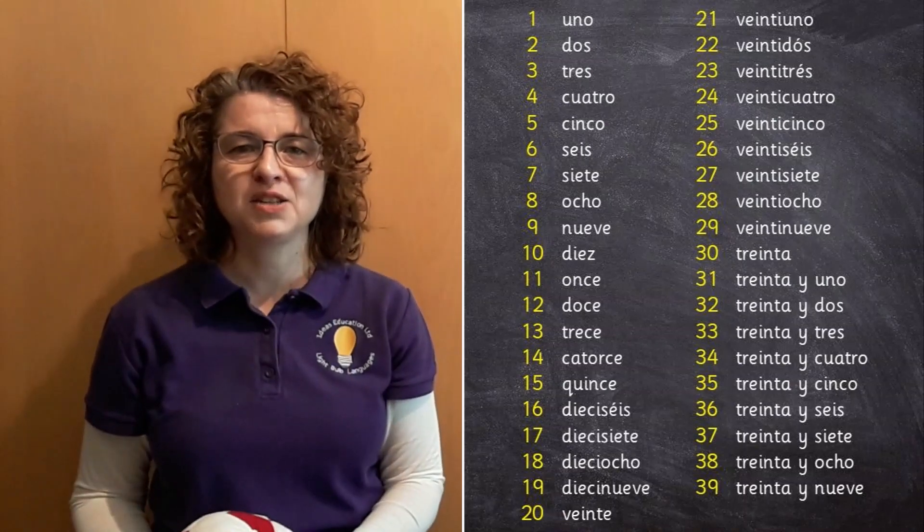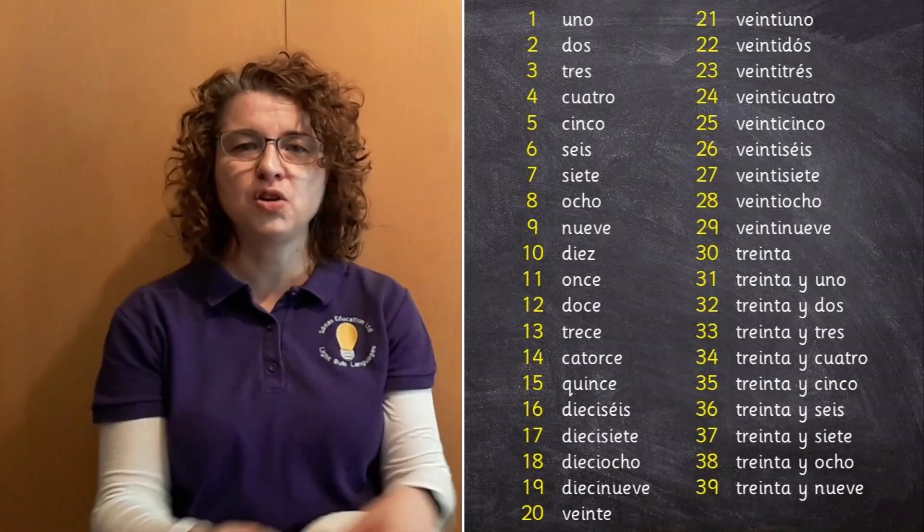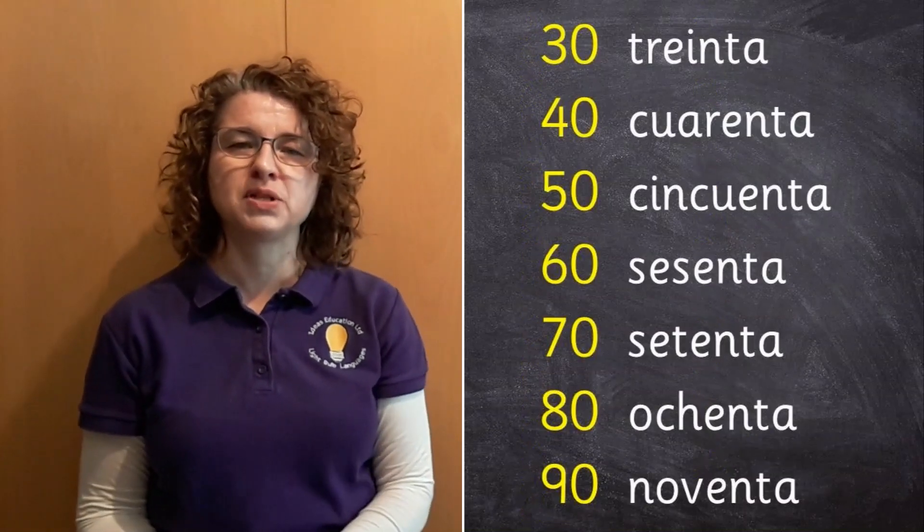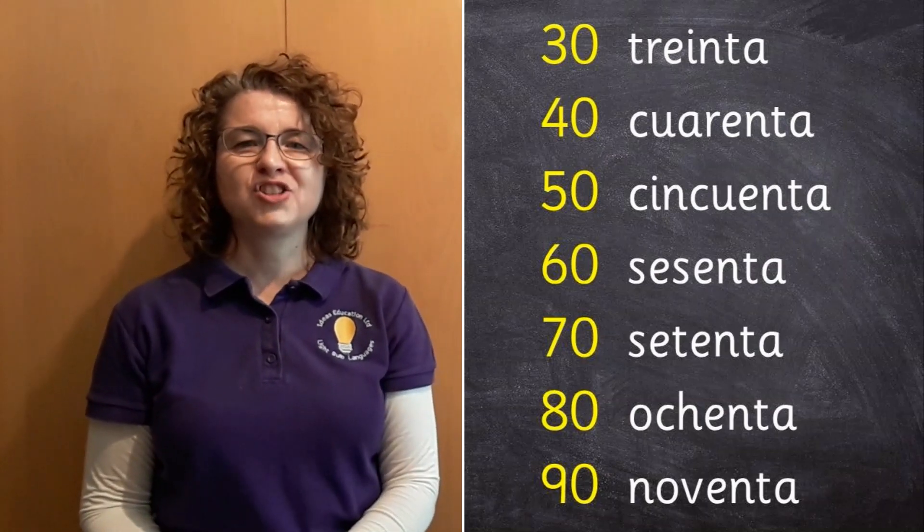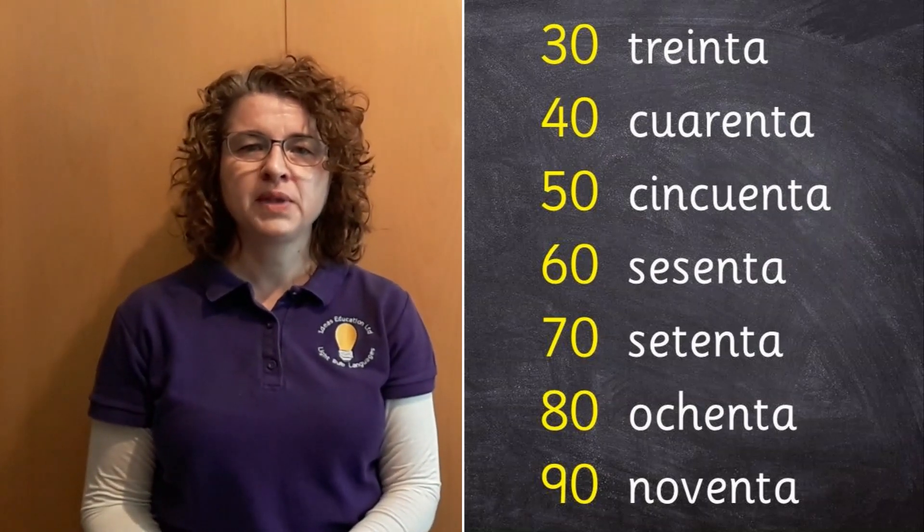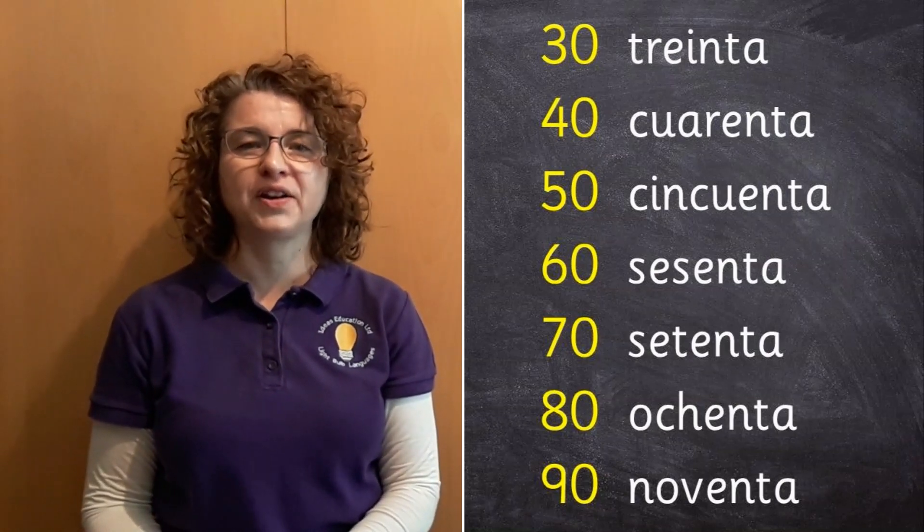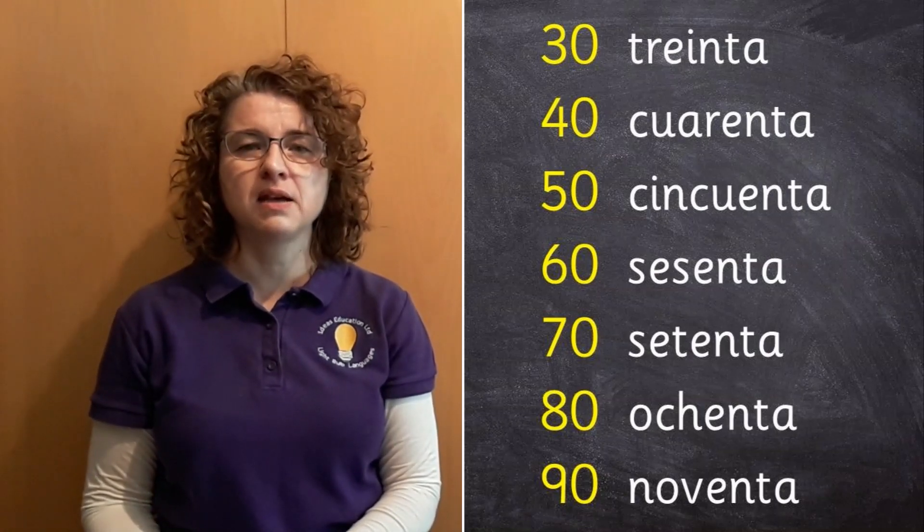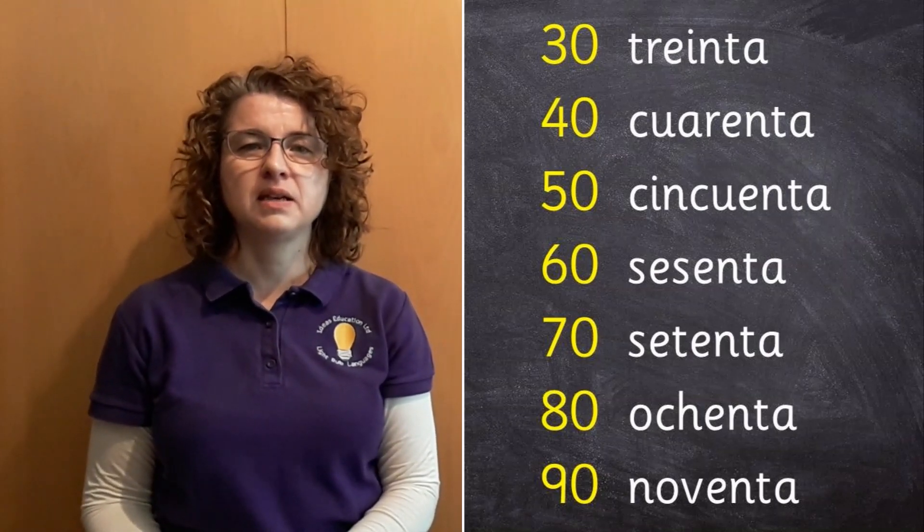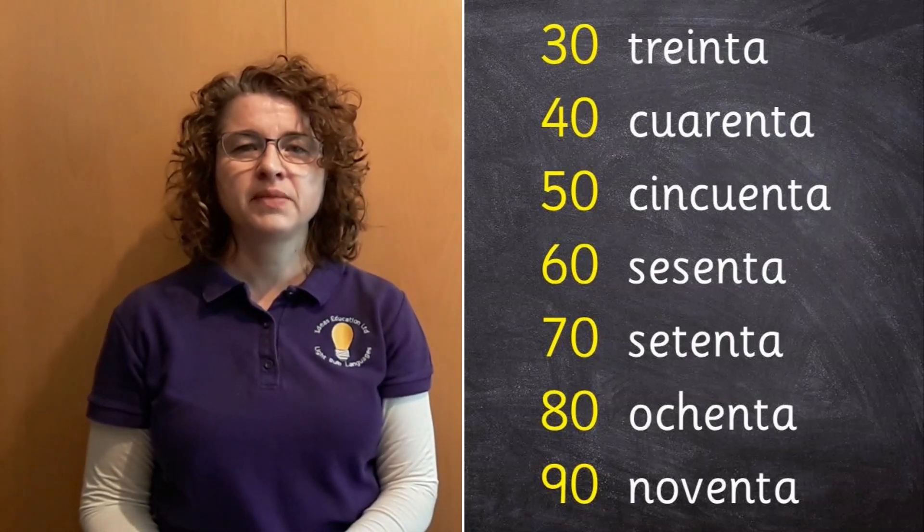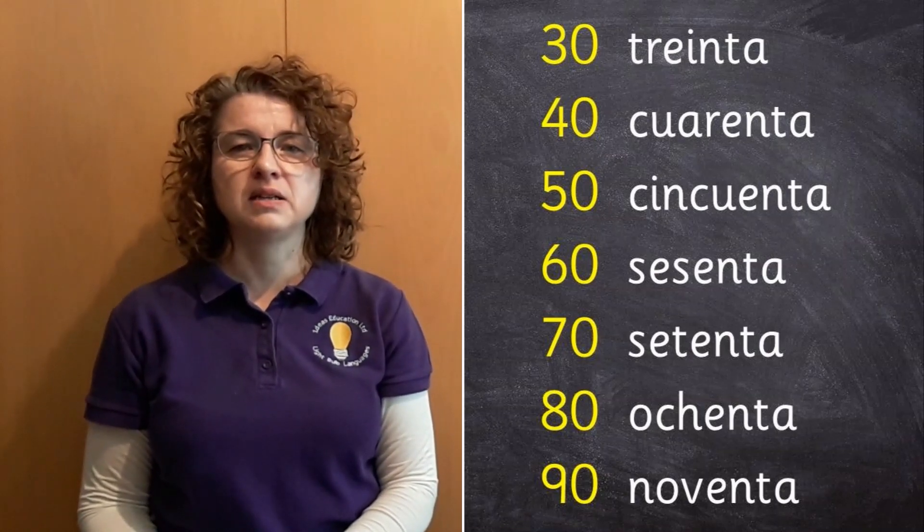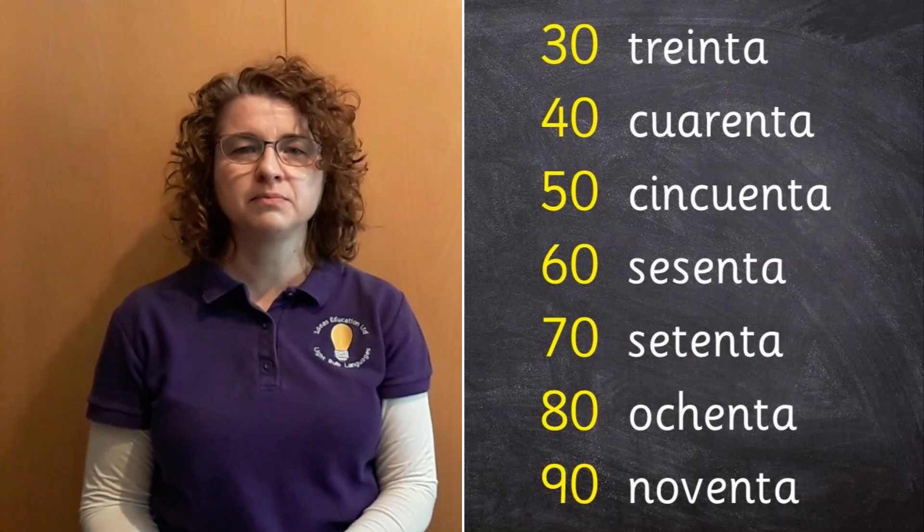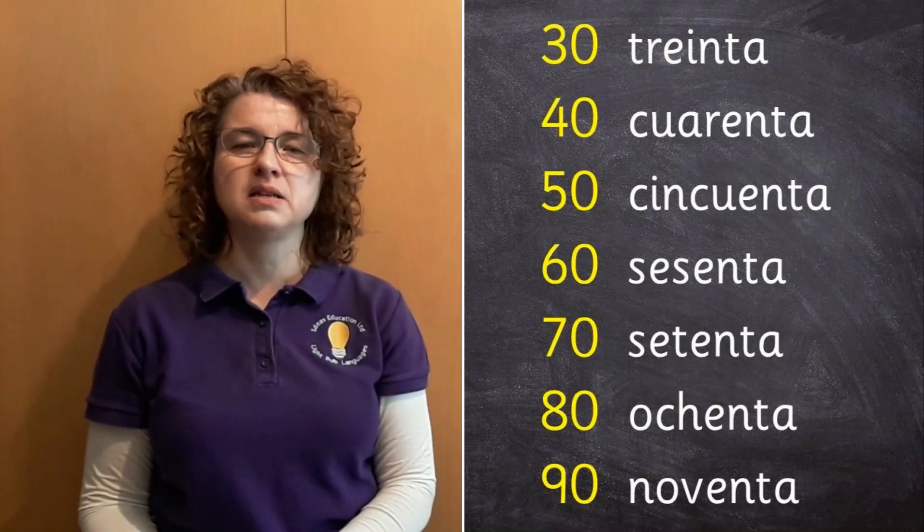And that's all we need because the next number is going to be a new one. So we need some new tens, don't we, to make these new numbers with. So we know 30 is treinta, 40 is cuarenta, 50 is cincuenta, 60 is sesenta, 70 is setenta, 80 is ochenta, and 90 is noventa.